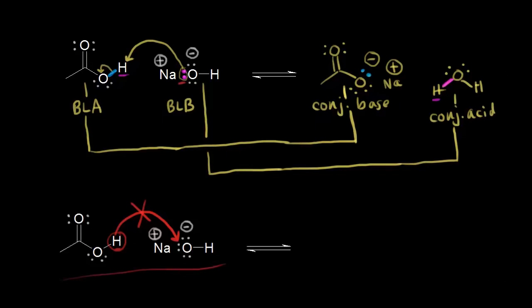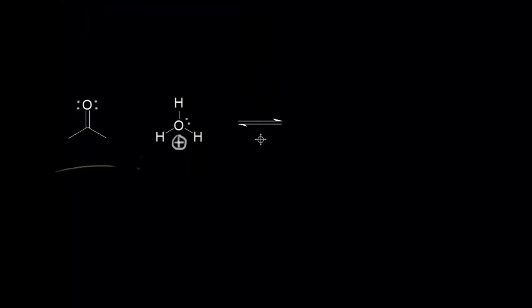Let's do one more acid-base mechanism for some extra practice. On the left we have acetone, and on the right we have the hydronium ion, H3O+. The hydronium ion is going to function as our Bronsted-Lowry acid — it's going to donate a proton to acetone, which is going to be our Bronsted-Lowry base. A lone pair of electrons on this oxygen could take this proton and leave these electrons behind on this oxygen.